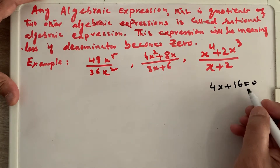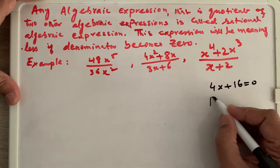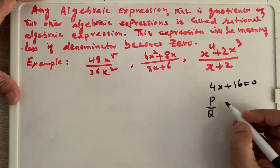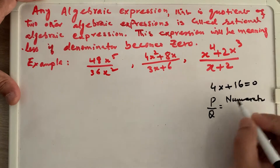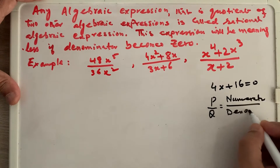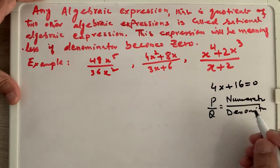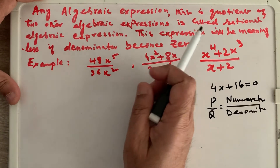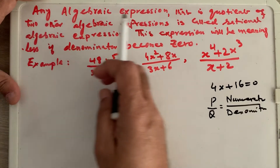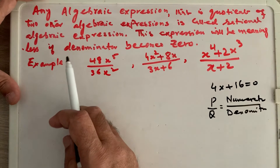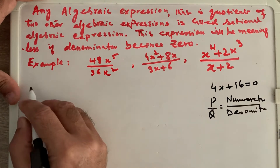When it comes to rational numbers, rational numbers are those which can be written in the form of p over q — meaning there is a numerator on top and a denominator on the bottom. Not only in math but in algebra we also have such expressions, where we have numerators and denominators. By definition, any algebraic expression that is the quotient of two other algebraic expressions is called a rational algebraic expression.